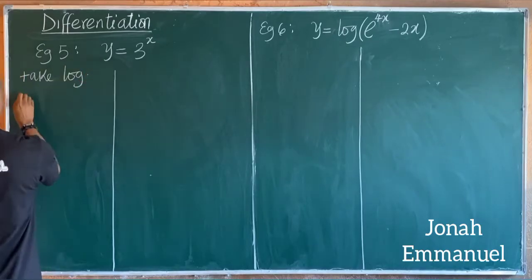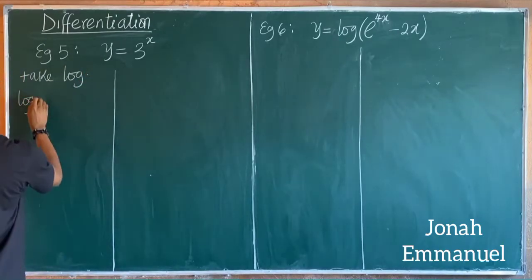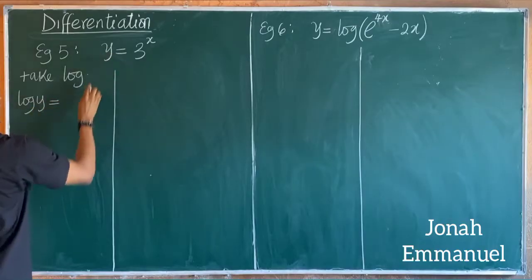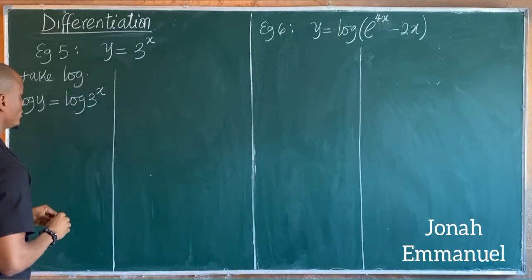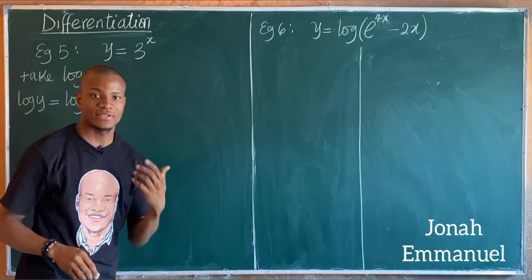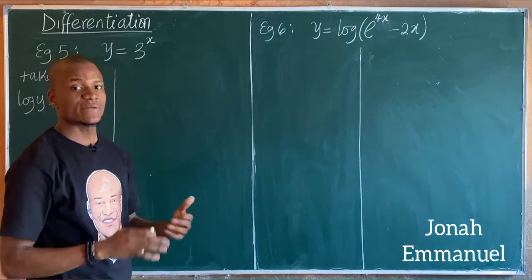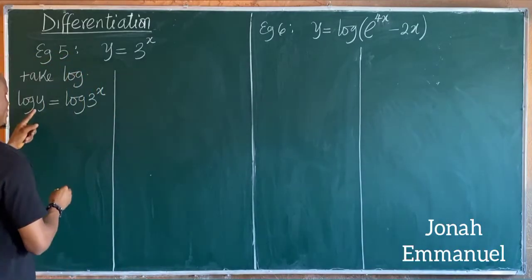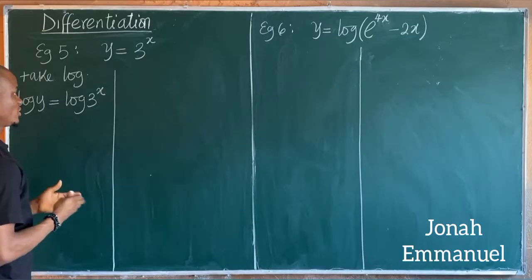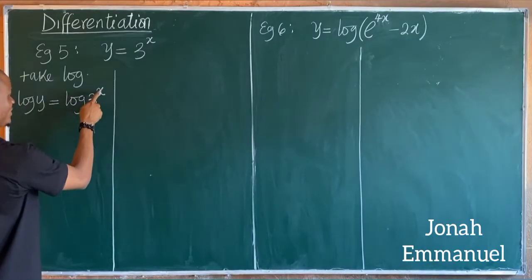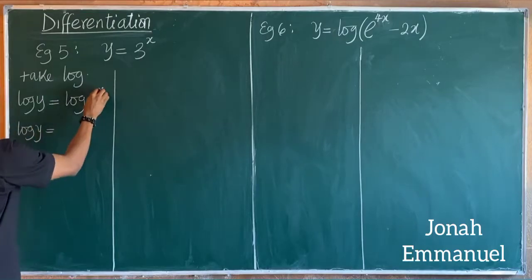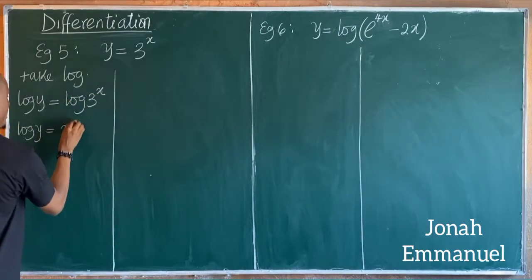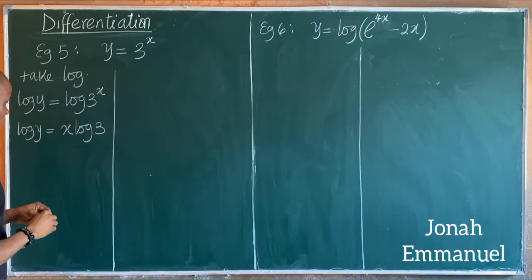Taking log of both sides gives us log y equal to log of 3 to the power x. Using the laws of logarithms, the power comes down, so this becomes log y equal to x log 3.